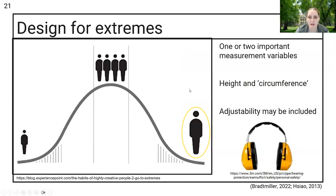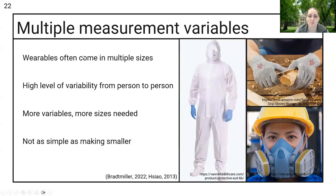Another strategy is designing for extremes. We see this in doorways, in car seats, in lots of different environments. If the tallest person can fit through the doorway, so can the shortest person. We see designing for extremes happen when there are one or two important measurement variables like height and circumference. There's some adjustability that could be included, such as the seats in our cars. In terms of PPE, the one that comes to mind might be hearing protection - headphones can adjust to many different head sizes.